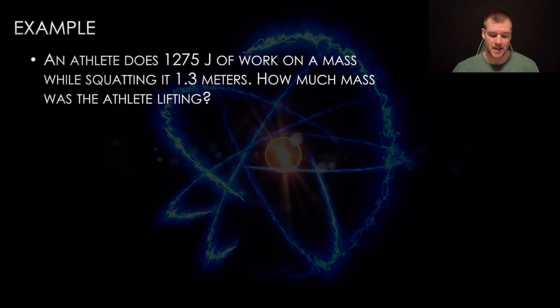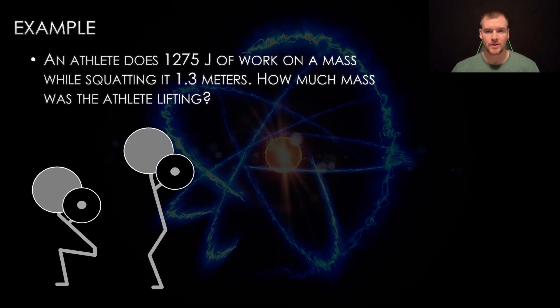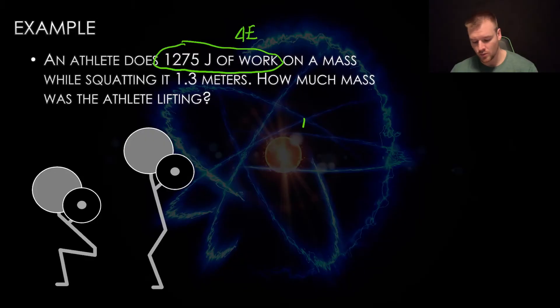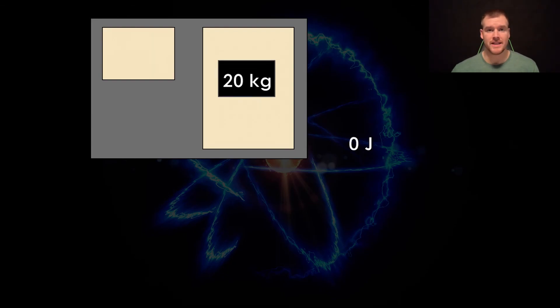Let's try an example. An athlete does 1,275 joules of work on a mass while squatting 1.3 meters. How much mass did the athlete lift? The athletes lift the weights up. First thing we notice, it says 1,275 joules of work. We have to remember that work is equal to a change in energy. So that's the potential energy that it's gaining as it goes up. It's important to note we are just focused on the change in energy.